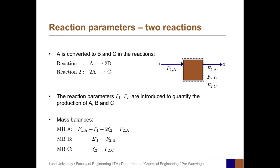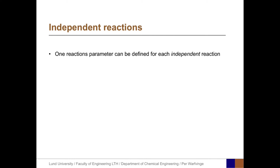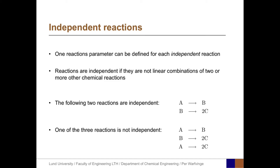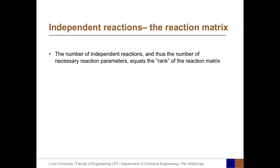We must check that the reactions we quantify are independent, and one reaction parameter can be defined for each independent reaction. Reactions are independent if they are not linear combinations of two or more other chemical reactions. In one example, two reactions are independent because one cannot be produced as a combination of the other. In a contrasting example with three reactions, one is not independent because the third reaction can be produced as the sum of the first two. The number of independent reactions equals the rank of the reaction matrix.